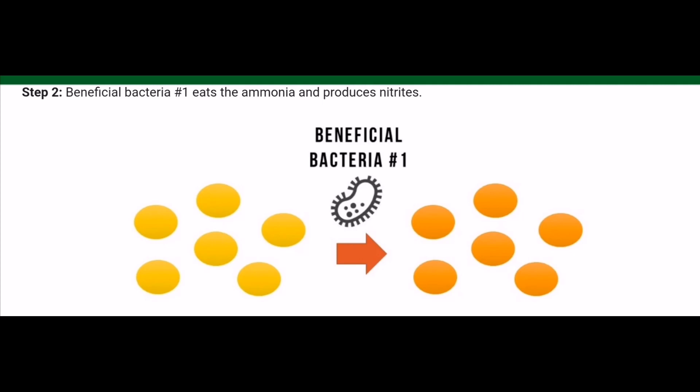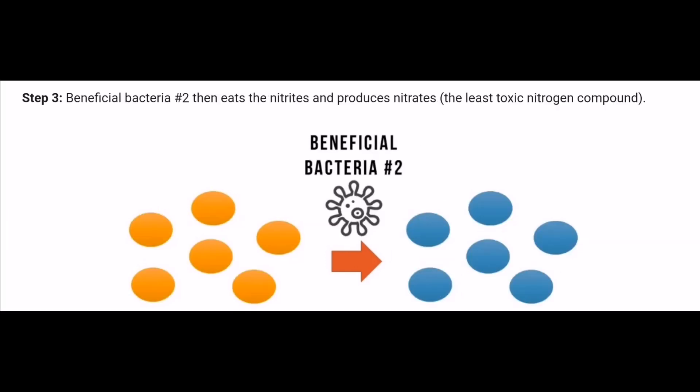On the second stage, beneficial bacteria converts ammonia into nitrites. Keep in mind that high levels of nitrites can also be poisonous to your fish. On the third stage, another beneficial bacteria converts nitrites into nitrates, a much lesser toxic compound.